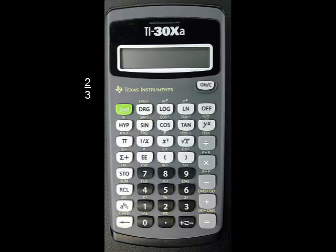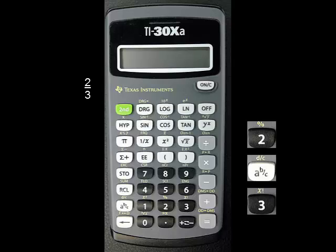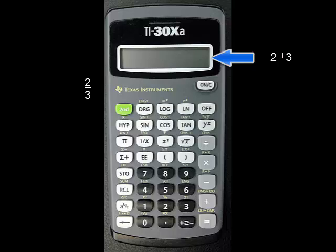For example, to enter the fraction two-thirds, press 2, then the ABC button, then 3. The fraction appears on the screen as a 2, a little symbol that looks like a backwards L, and a 3. Read the backwards L symbol as over, so that the display reads 2 over 3.